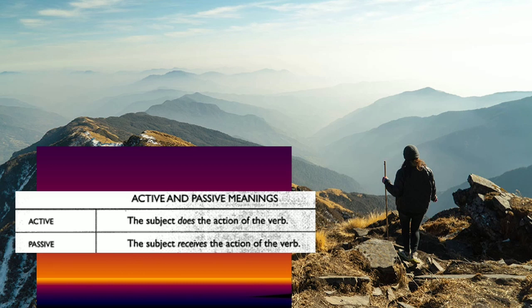I have to emphasize again: in an active sentence, the subject does the action of the verb. Meanwhile, in a passive sentence, the subject receives the action of the verb. So in active, the subject performs something; in passive, the subject receives something. That is the difference between active and passive. Let's study more from another sentence.